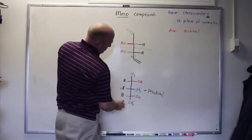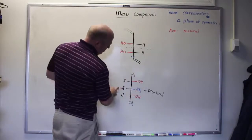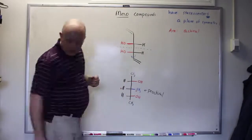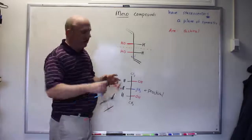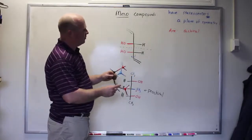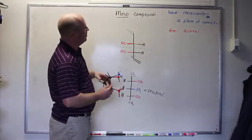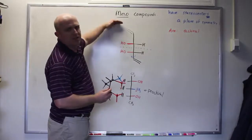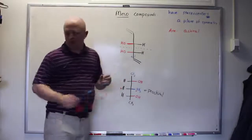Anytime you have both multiple stereogenic centers and a plane of symmetry, you have an achiral molecule — which is to say, you have a meso compound.